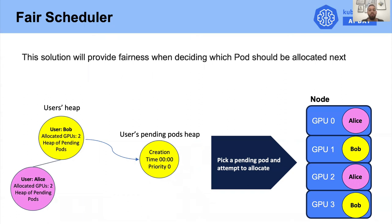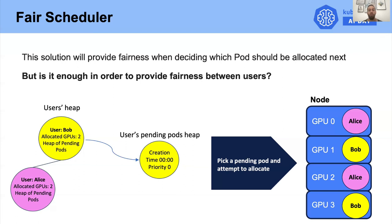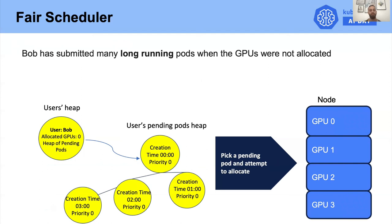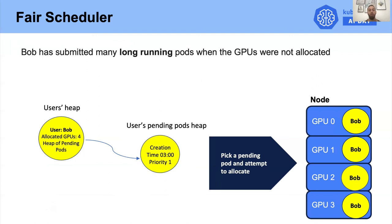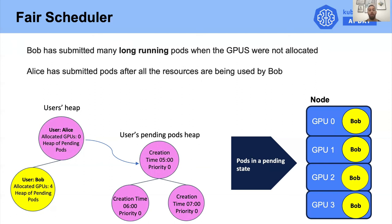This solution provides fairness when deciding which pods should be allocated next. But is it good enough to provide fairness overall? Consider this scenario: Bob has submitted many long-running pods when the GPUs were free. Because he was the only active user, we allowed Bob to use the whole cluster to maximize GPU utilization. Now when Alice submits pods, her pods remain pending and Alice is starved until Bob finishes — which could be weeks. This means a user can still monopolize the GPUs.